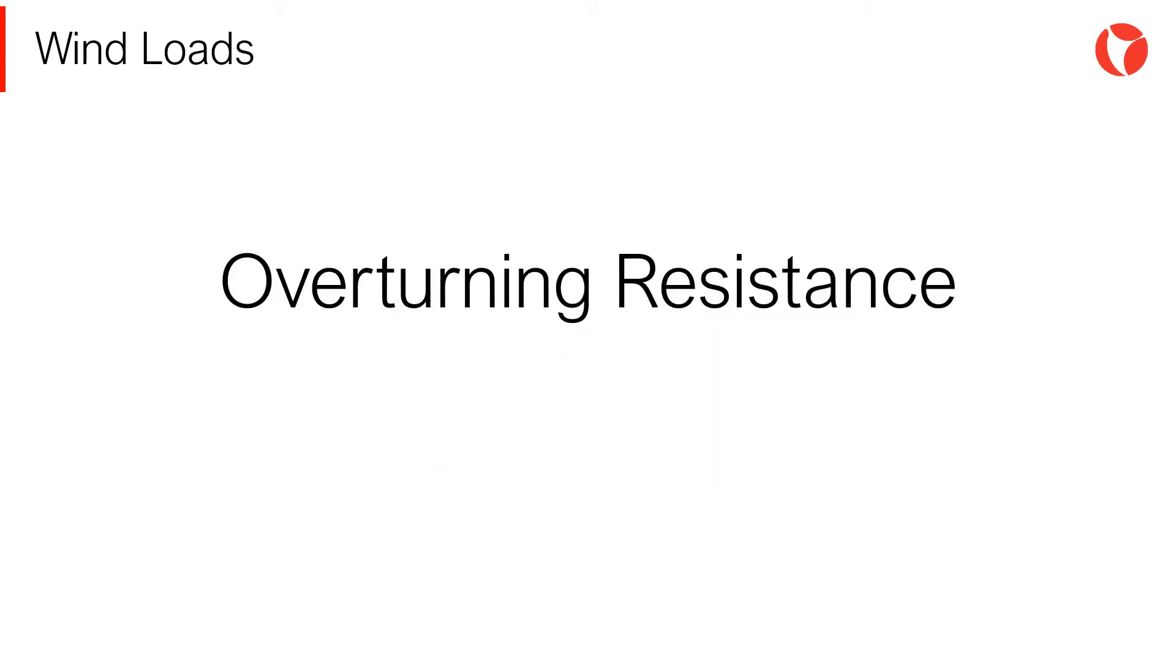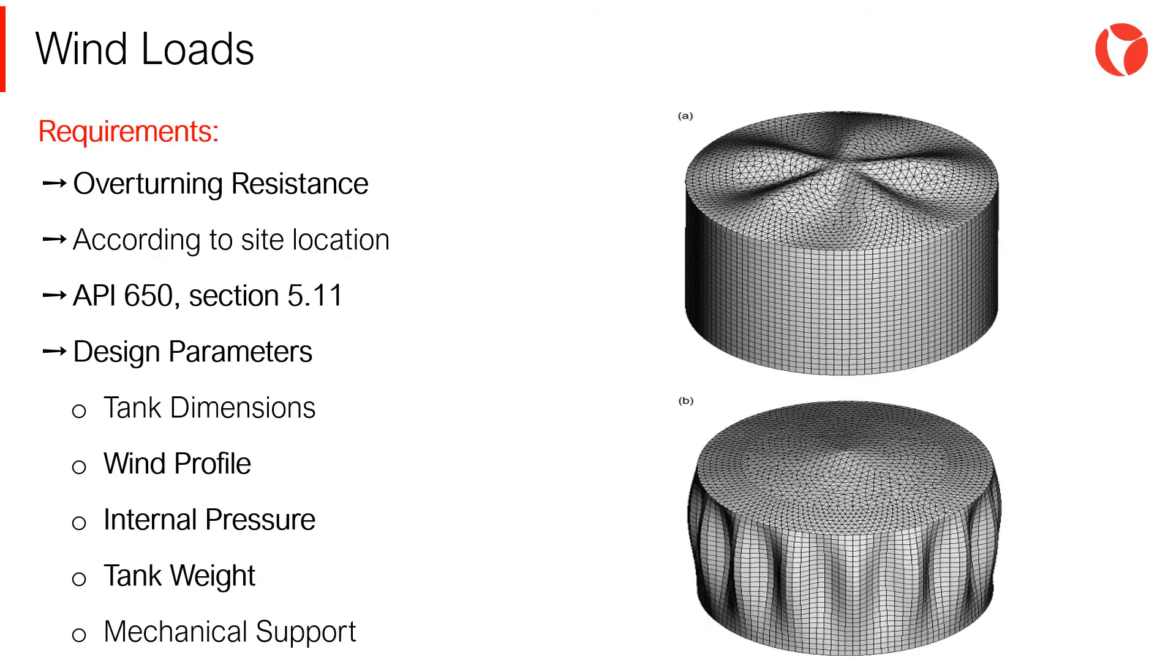To verify the stability of the tank and its resistance to overturning moment due to wind, the provisions of section 5.11 of the code should be applied. The procedure described in that section establishes two different verifications for both anchored and non-anchored tanks.